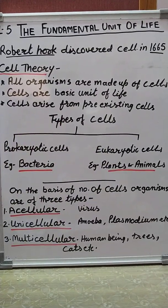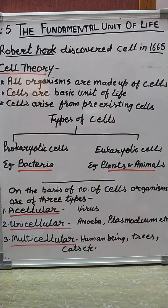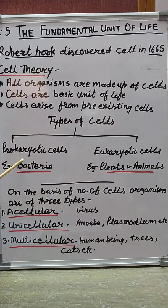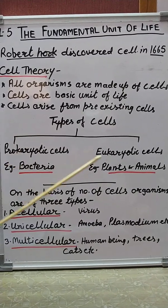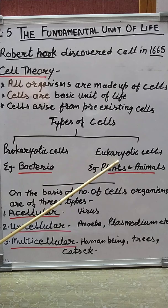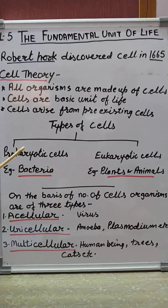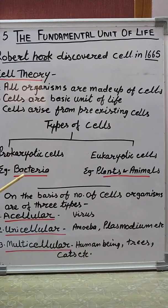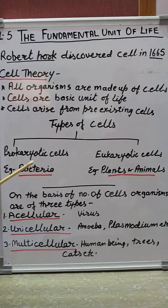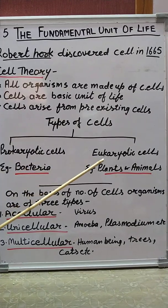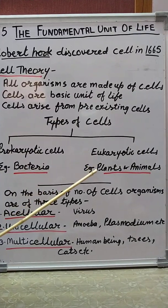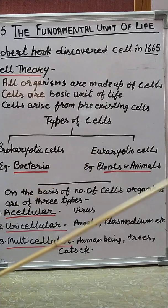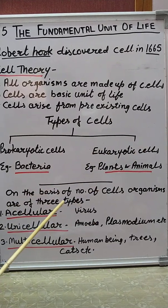There are two types of cells according to the presence of a nucleus in them: prokaryotic cells and eukaryotic cells. Examples of prokaryotic cells are bacteria, while examples of eukaryotic cells include plants and animals.